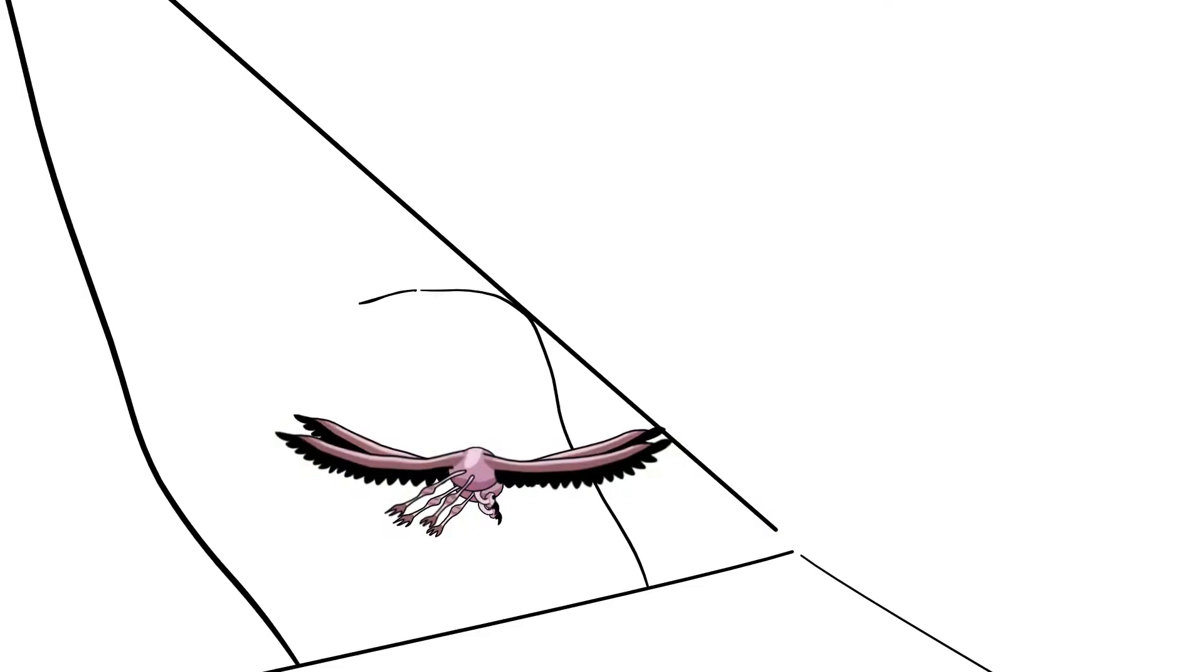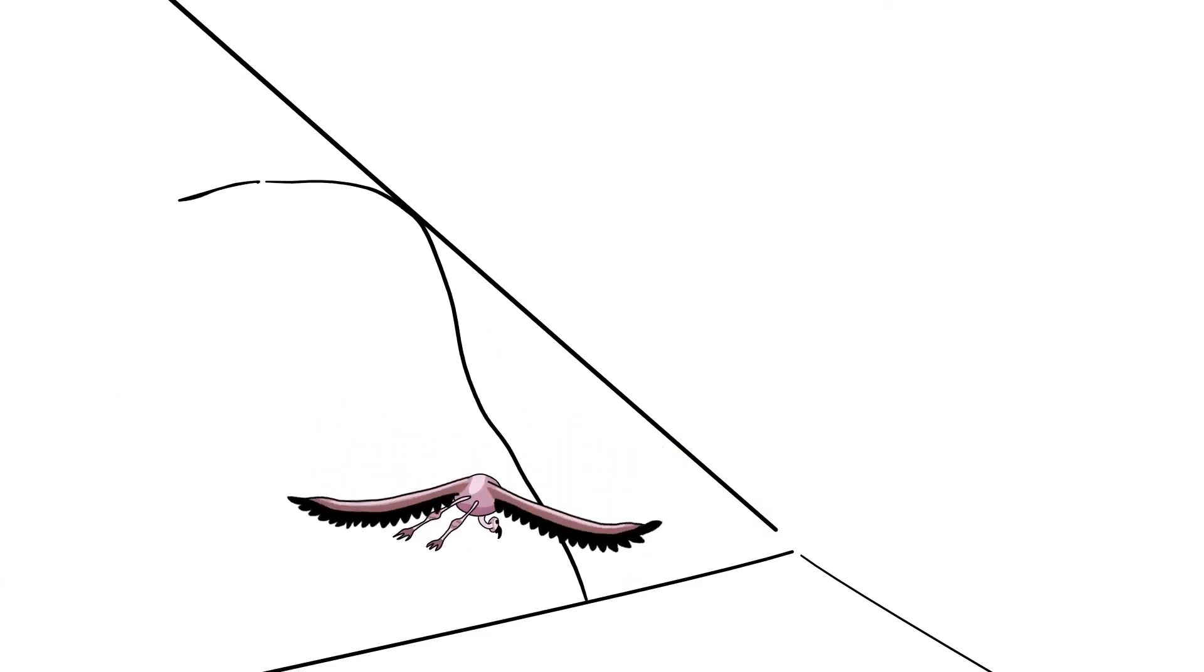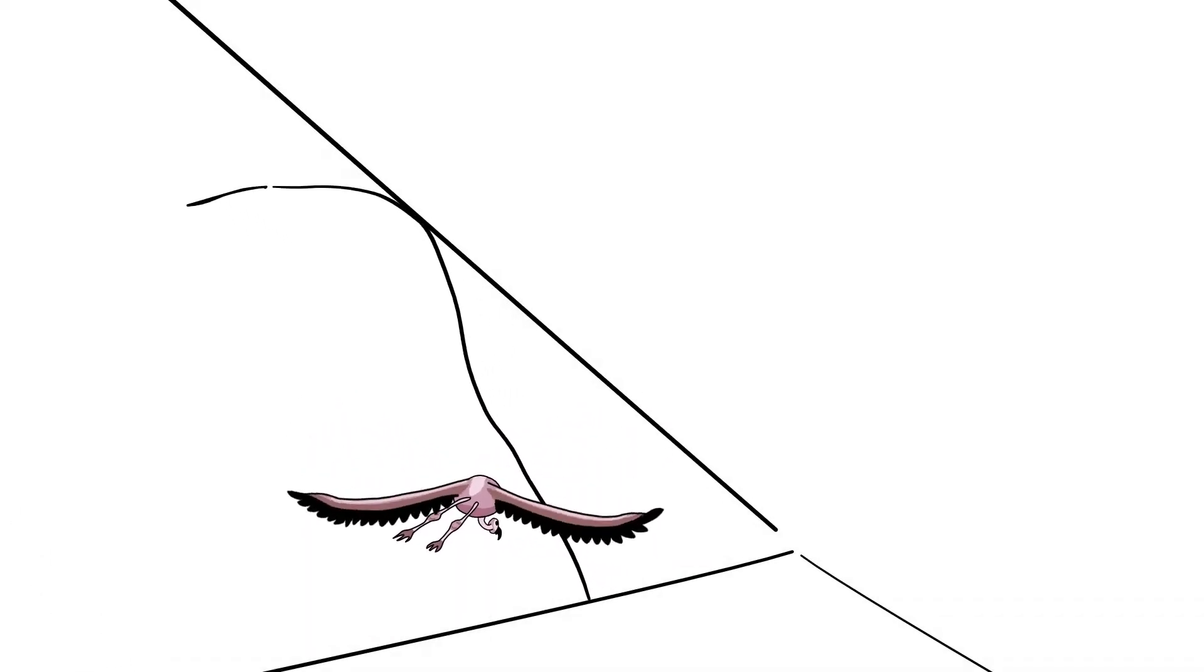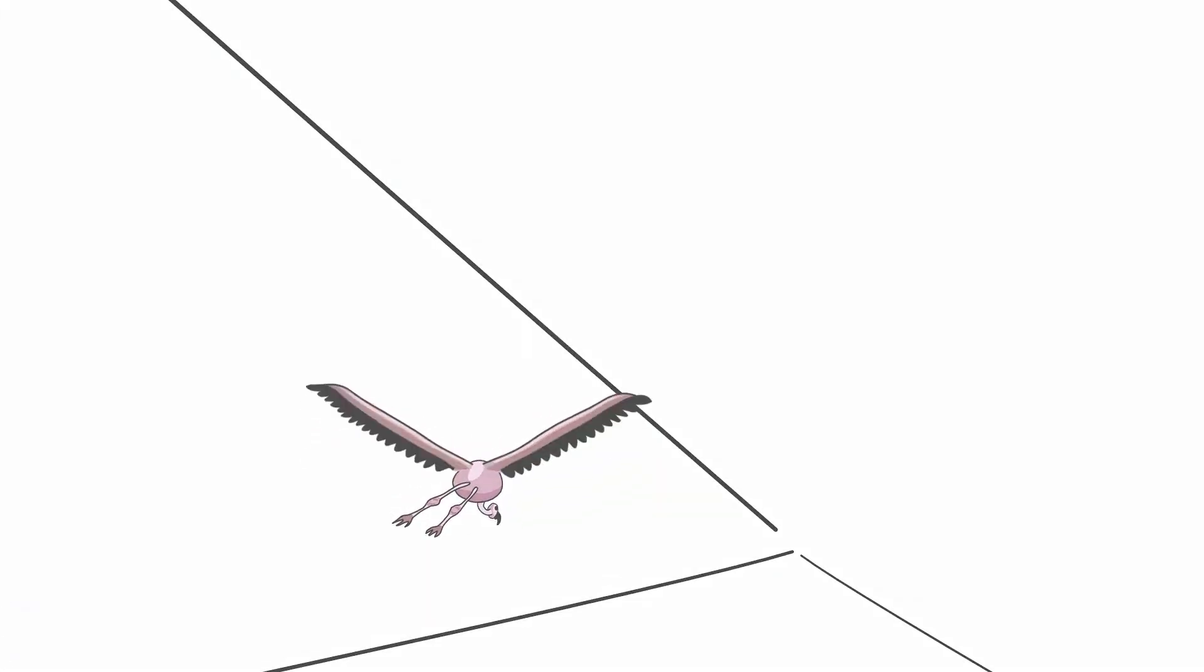So I created this in OpenToons. Basically, it's a couple of lines to give me perspective, and I drew in some lines for where the cliffs will be. I tried to set it up to create the illusion that the cliffs are going past the flamingos as they fly.